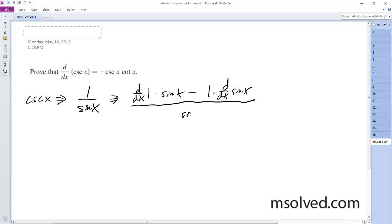So what we get is 0 times sine of x minus 1 times the cosine of x over the sine squared of x.